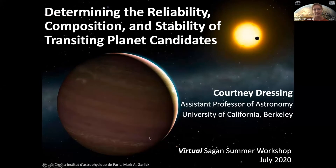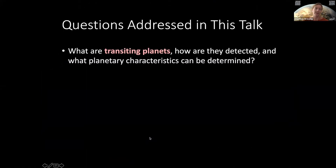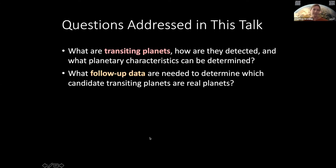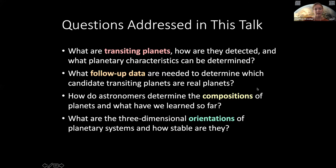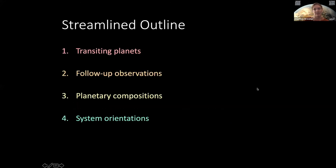In this presentation I'm going to address a series of questions. We'll start off by reviewing what transiting planets are, how they're detected, and how we can determine the properties of those planets. Next we'll discuss the follow-up data that we can obtain to learn more about these systems and figure out which ones are real planets versus which ones are astrophysical false positives. We'll then move on to discuss how we determine the compositions of planets and what we've learned so far, and then discuss the three-dimensional orientations of planetary systems.